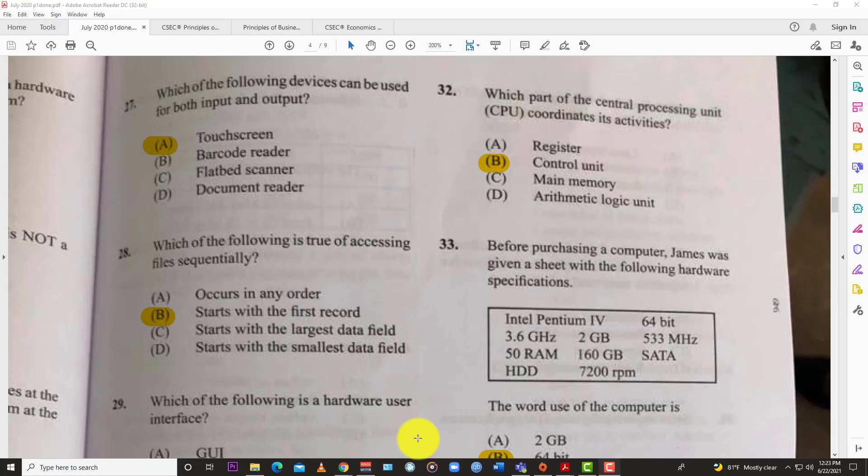Question 32: Which part of the Central Processing Unit coordinates its activities? The answer here is of course the Control Unit. It's actually in the name right there—coordinates, Control Unit.